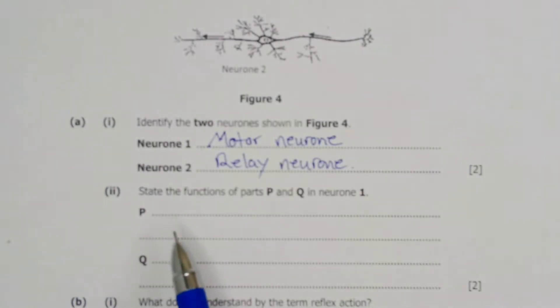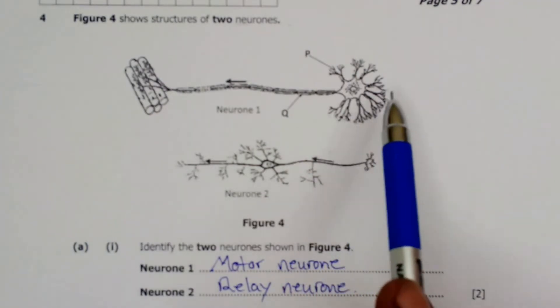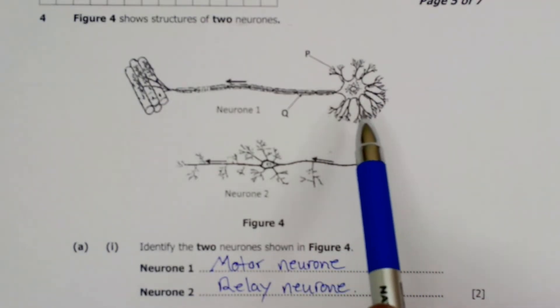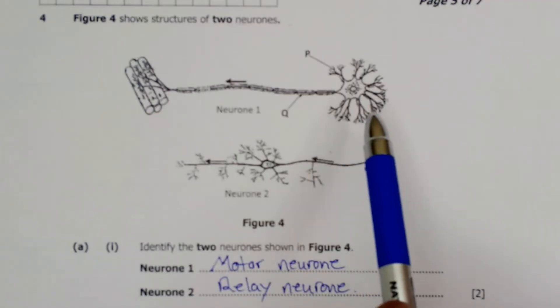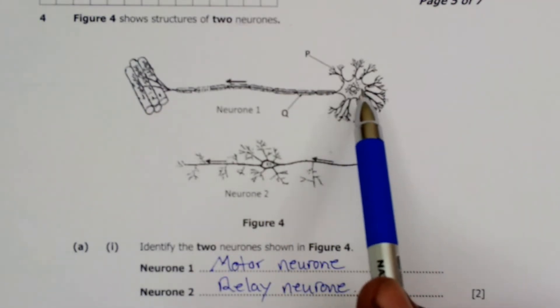Next part, which is A2, state the functions of part P and Q in neuron one. So part P, these are the dendrites and the function of the dendrites is to receive electric impulses from neighboring cells such as the relay neuron and transmit it to the cell body.